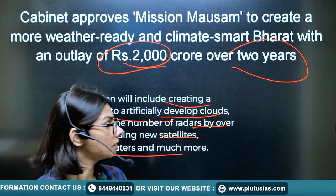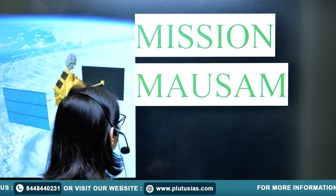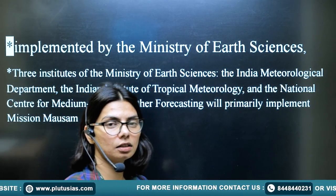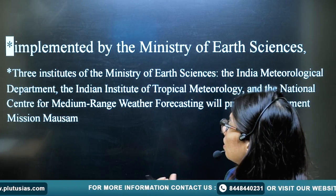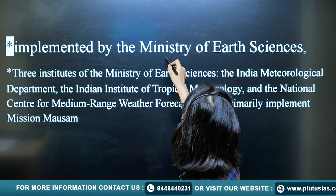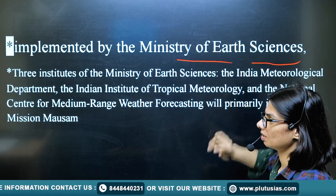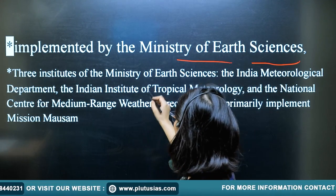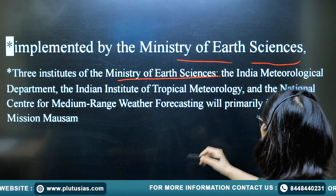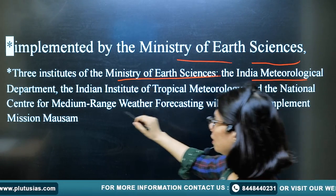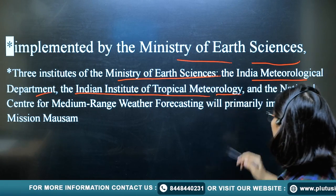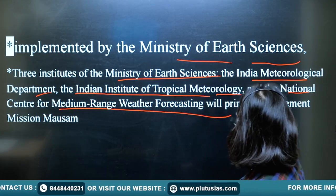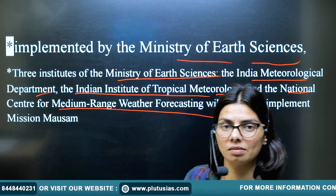Mission Mausam is implemented by the Ministry of Earth Sciences. Primarily, there are three institutes involved: the India Meteorological Department, the Indian Institute of Tropical Meteorology, and the National Centre for Medium Range Weather Forecasting, which will primarily implement Mission Mausam.